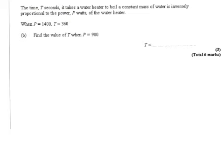On part B, we are told that the time it takes for water to boil a constant mass of water is inversely proportional to the power. So we write that t is inversely proportional to the power, shown by putting 1 divided by p. So t equals our constant over p.